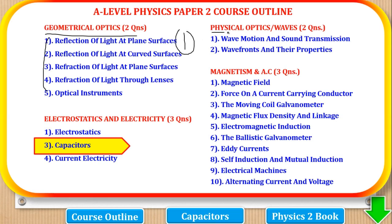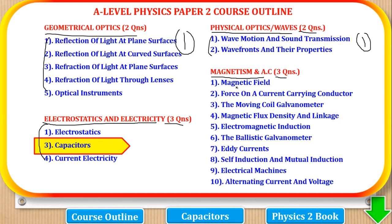The next part is physical optics, or what we call waves. Also, 2 questions come from these topics and a student must answer 1. The next part is electrostatics and electricity, where 3 questions come from these topics. And the last part is magnetism and AC, where 3 questions come from these topics.